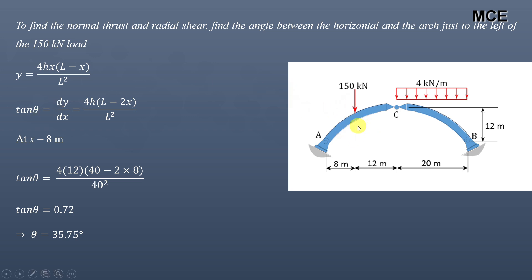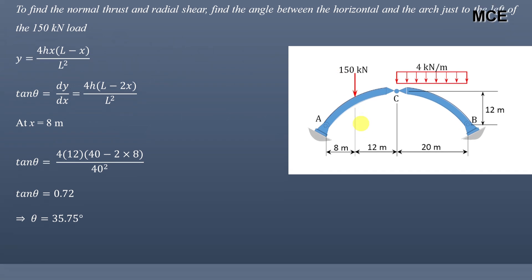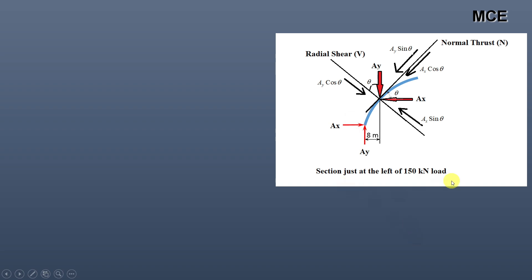This gives tan θ = 0.72, so θ = tan⁻¹(0.72) = 35.75°. This is the angle the arch makes with the horizontal just to the left of the 150 kN load. Knowing this angle, we can now find the radial shear and normal thrust. A section is cut just to the left of the 150 kN load. The normal thrust acts normal to the arch cross-section, and the radial shear acts along the radial direction of the arch.